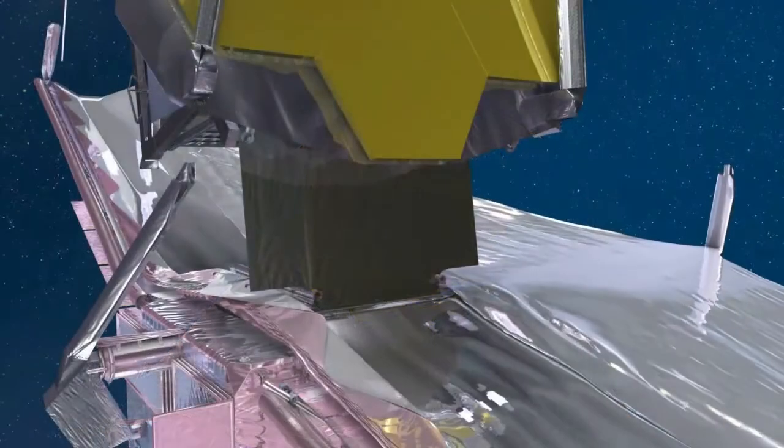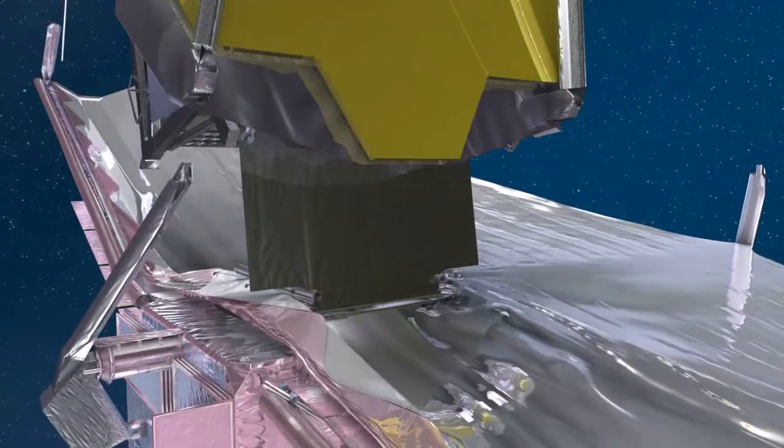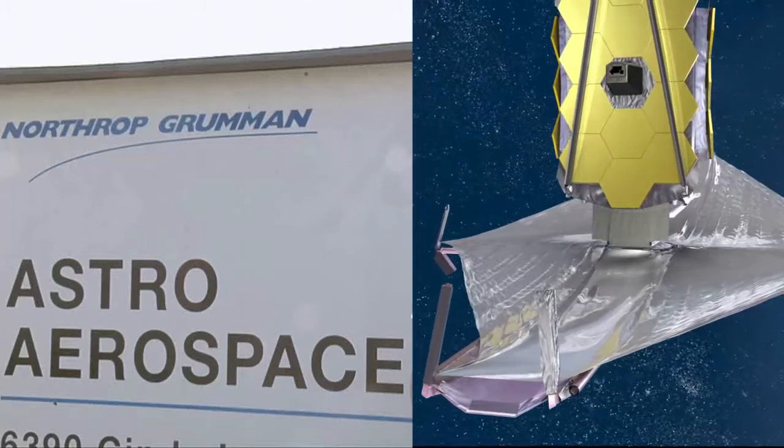Finally, the mast boom mechanism that deploys Webb's sunshield is being developed at Northrop Grumman Astro Aerospace in Goleta, California.